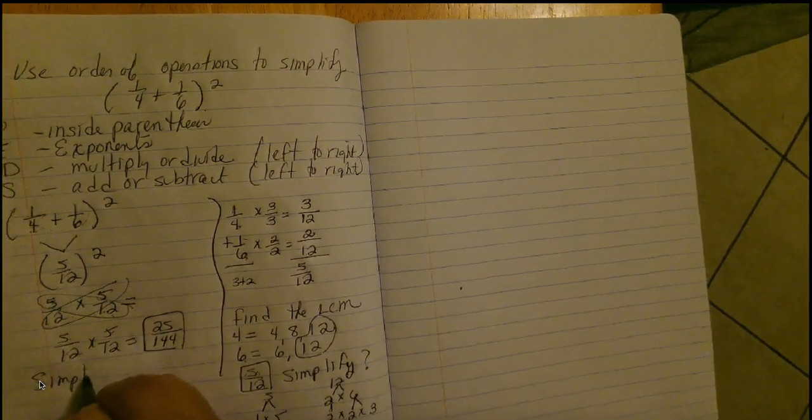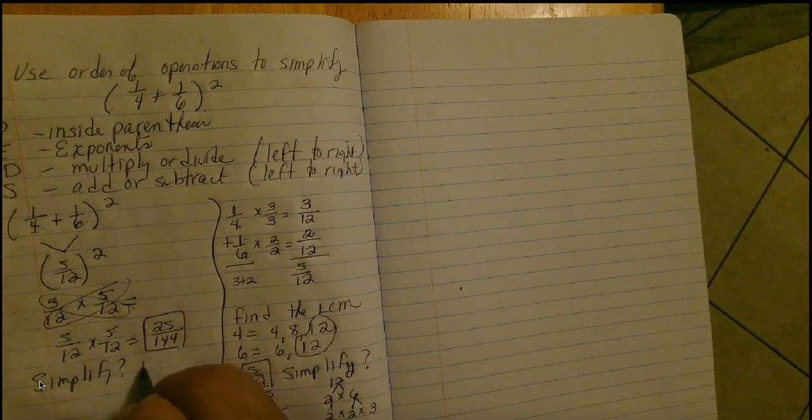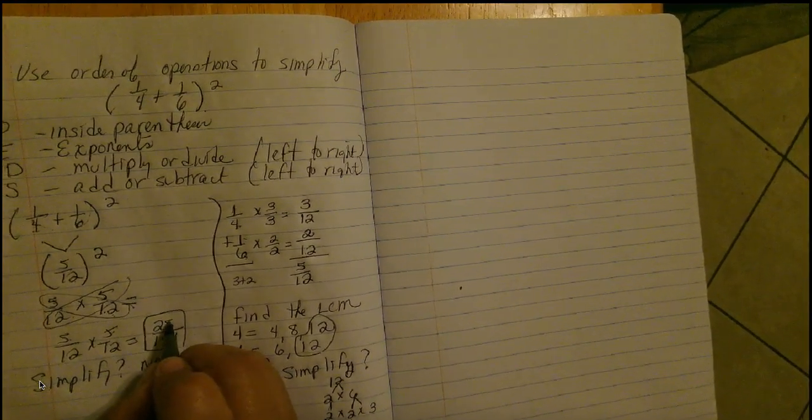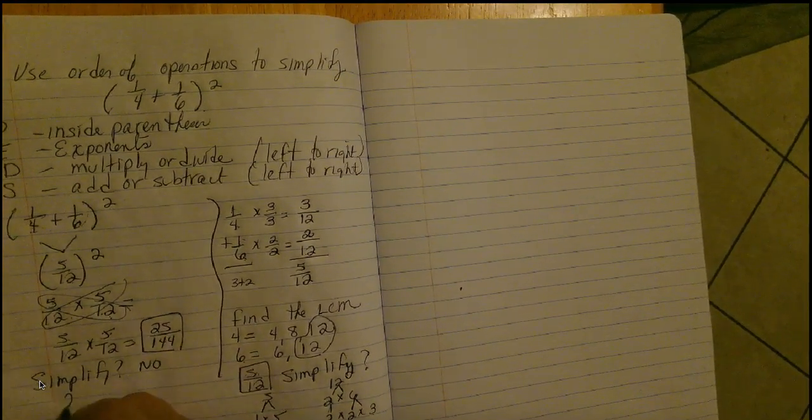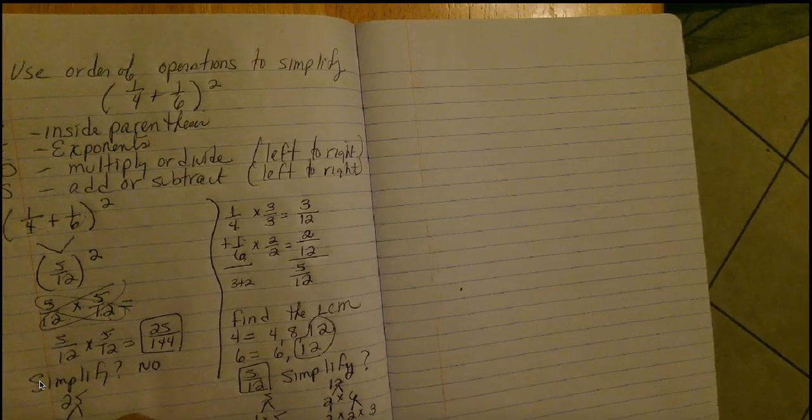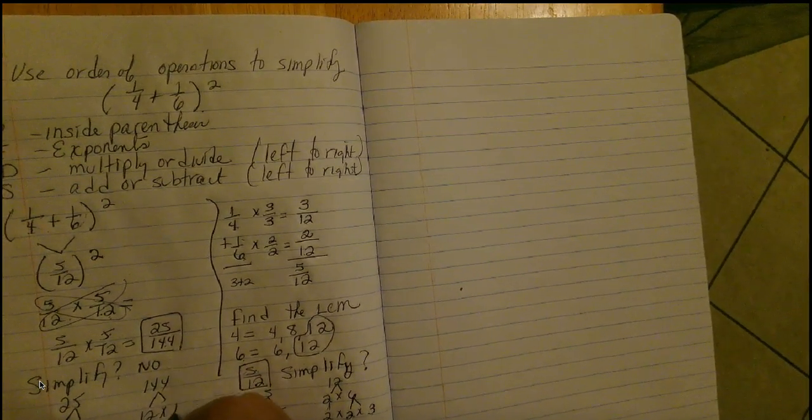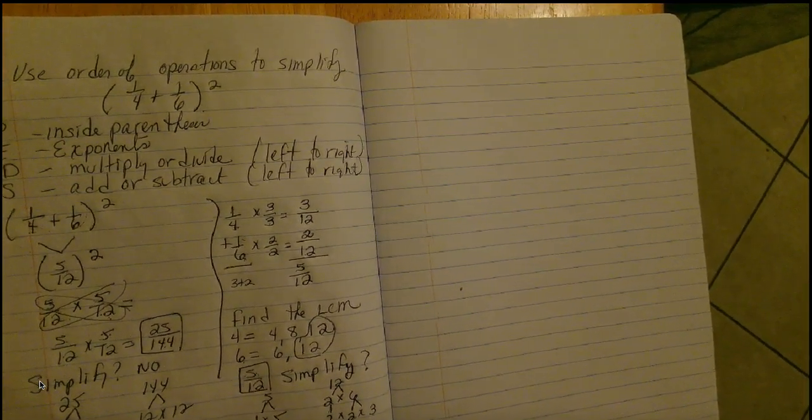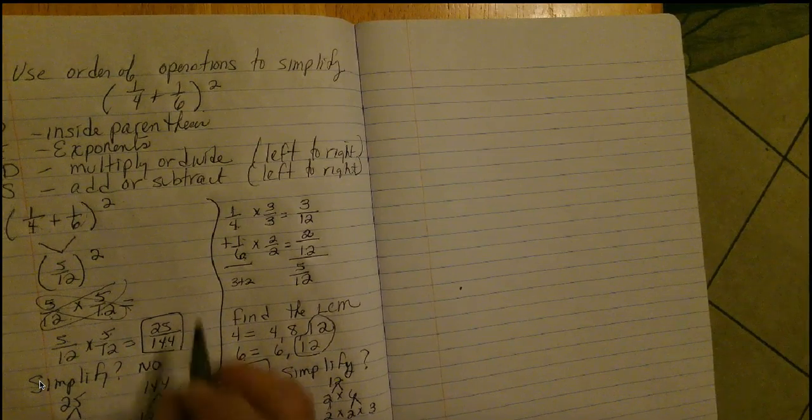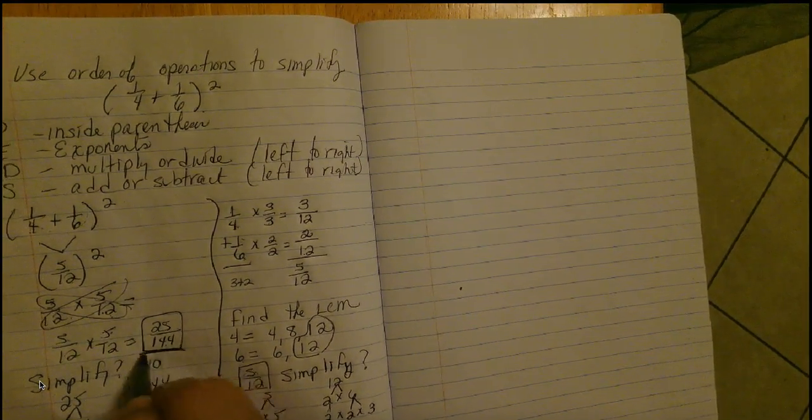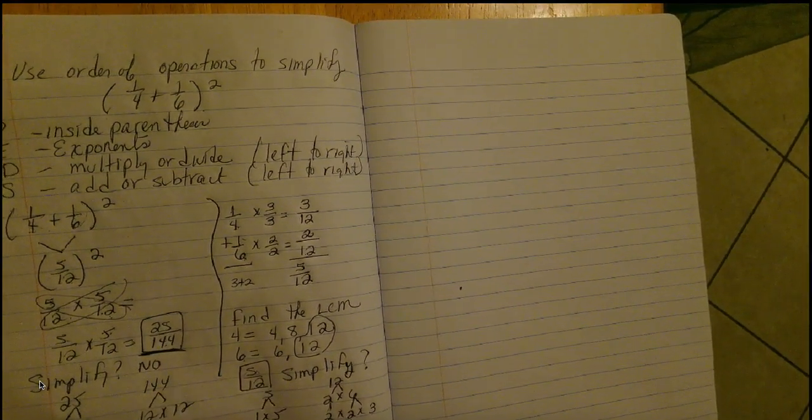So, does this one simplify? No. Because twenty-five is five times five. One forty-four is twelve times twelve. And they have no common factors. So, the answer to this problem is twenty-five over one hundred forty-four.